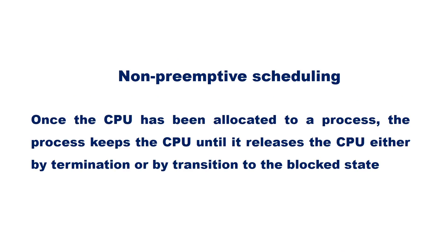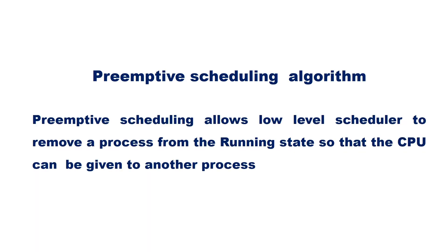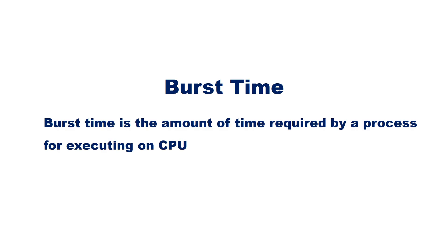In non-preemptive scheduling, once the CPU has been allocated to a process, the process keeps the CPU until it releases it either by termination or by transition to the blocked state. That means the operating system cannot forcefully change the running state of a process. Preemptive scheduling allows the low-level scheduler to remove a process from the running state so that the CPU can be given to another process — a process can be forcefully taken back from the CPU before its completion.